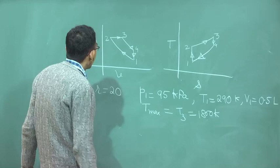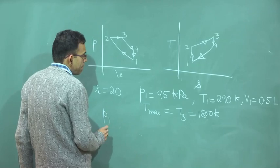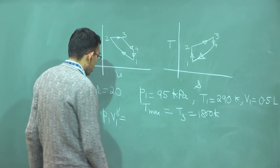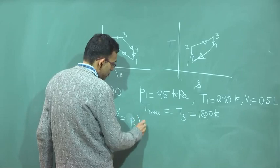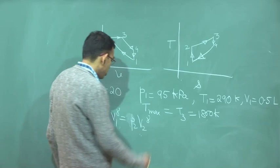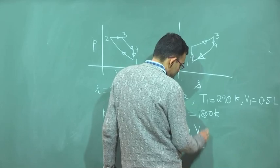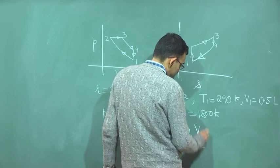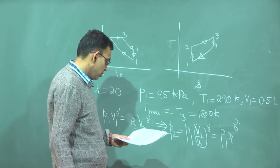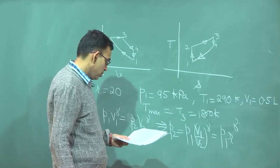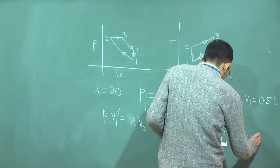From isentropic compression: P₁V₁^γ = P₂V₂^γ, so P₂ = P₁ · (V₁/V₂)^γ = P₁ · R^γ. With all values known, P₂ = 6297.5 kPa, which is the same as P₃ = P_max.